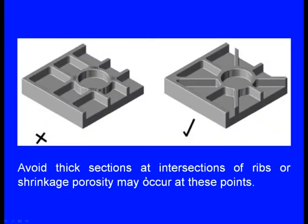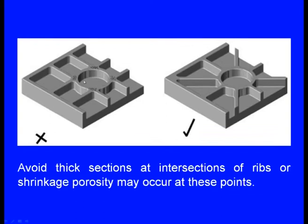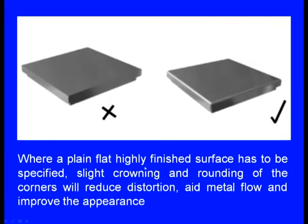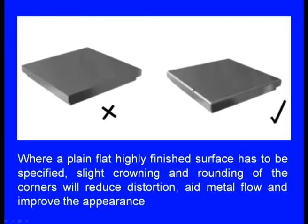Avoid thick sections at intersections of ribs, as shrinkage porosity may occur at these points. The design should be modified such that thick sections do not appear at intersections. Where a plain flat highly finished surface has to be specified, slight crowning and rounding of corners will reduce distortion, aid metal flow, and improve appearance. Rounded edges with slight crowning constitute a better design.